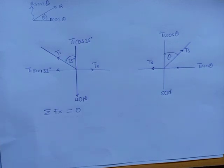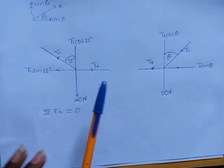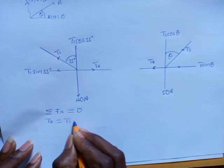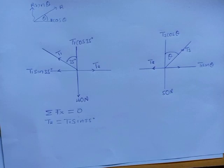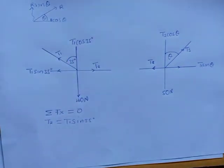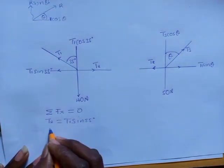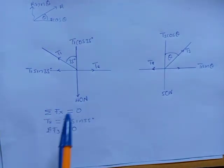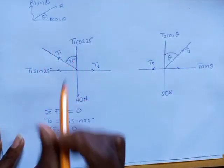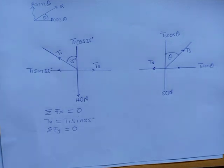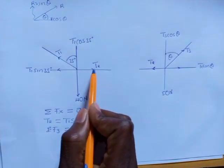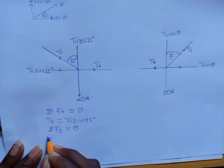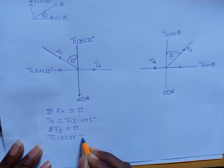In the x-axis we have two forces, so I'll say T2 has to be equal to T1 sine 35 degrees. Then looking at what we have in the y-axis, the forces in the y must also be balanced. Based on the first diagram, all forces must be pointing away from the object. T2 points to the right in this diagram and to the left in the other, giving us T1 cos 35 equal to 40.